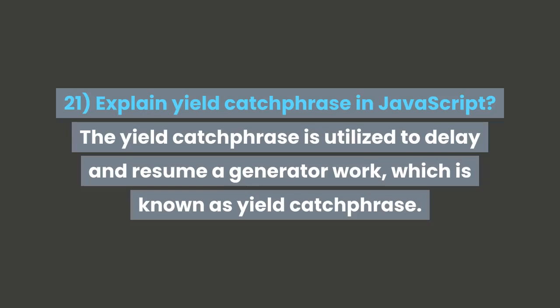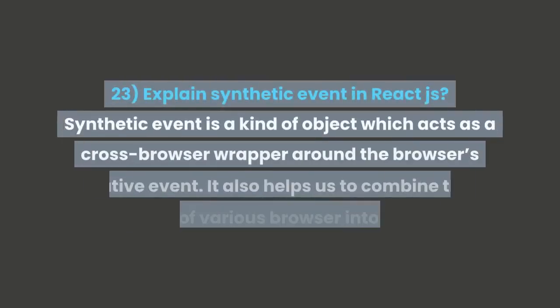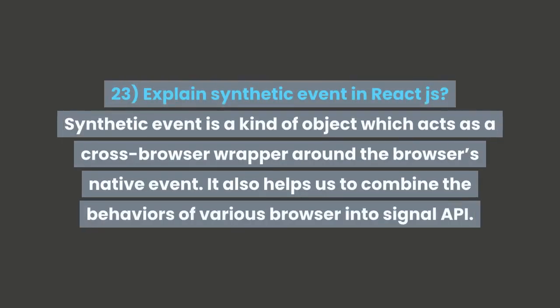Question 22: Name two types of React components. Two types of React components are function component and class component. Question 23: Explain synthetic events in React.js. A synthetic event is a kind of object which acts as a cross-browser wrapper around the browser's native event. It also helps to combine the behaviors of various browsers into a single API.